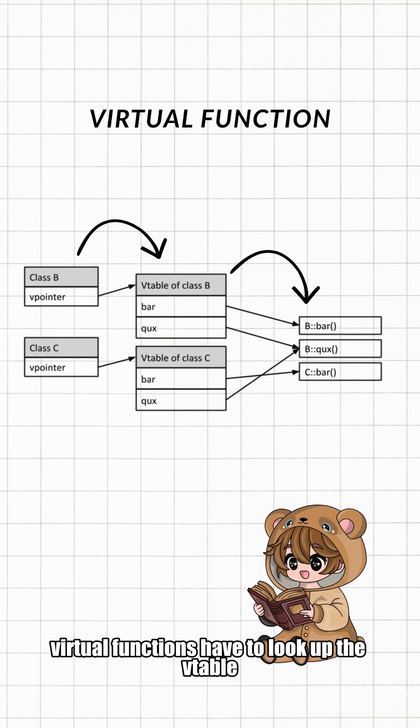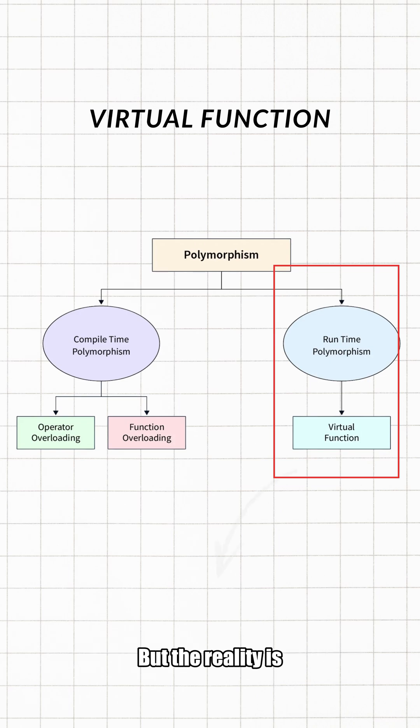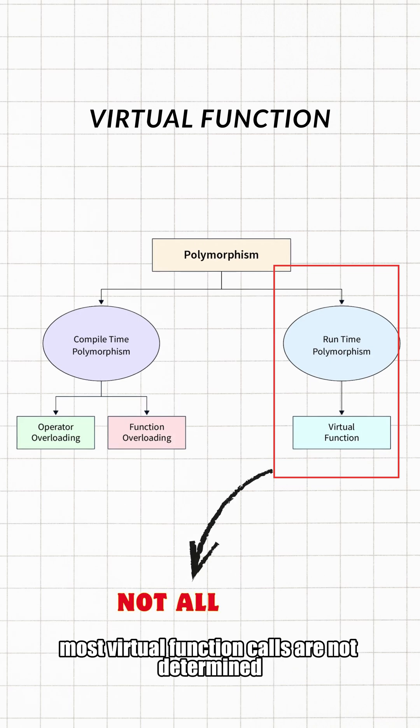You might have always thought that virtual functions have to look up the vtable every time they run, so they must be slower than regular functions, right? But the reality is most virtual function calls are not determined at runtime at all.